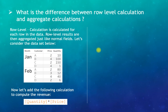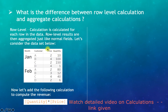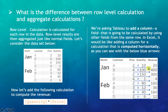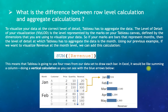The next question is: what is the difference between a row-level calculation and an aggregate calculation? A row-level calculation is performed for each row in your data, and the row-level results are then aggregated just like normal fields. For example, if you write Price multiplied by Quantity, that is a row-level calculation performed for each row. An aggregate calculation wraps the field in an aggregate function such as sum, average, mean, or max.